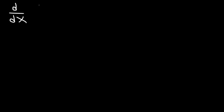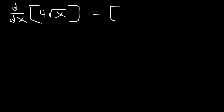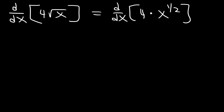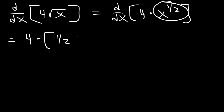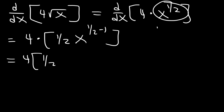Now let's apply the constant multiple rule with square root functions. What is the derivative of 4 times the square root of x? The constant is 4, but we need to rewrite the square root function. The square root of x is x raised to the 1/2. Using the power rule, it's going to be 4 times the derivative of x to the 1/2, which is 1/2 times x raised to 1/2 minus 1. 1/2 minus 1 equals 1/2 minus 2/2, which is negative 1/2.